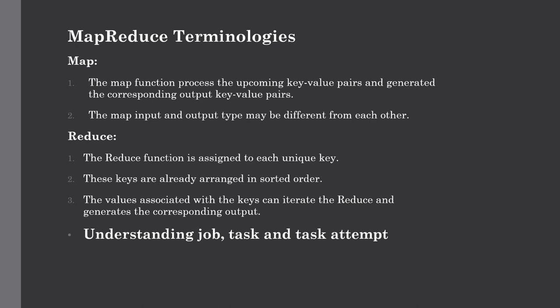The first phase of the MapReduce paradigm is the map function. Map takes key-value pairs as input. Whether the data is in structured or unstructured format, the framework converts it into a key-value pair, where the key references the input value and the value is the dataset on which we need to do the operation. In map processing, the function is defined by the user — any custom business logic according to their requirement. That function is applied to each and every key-value pair, and the map then produces a list of new key-value pairs. The output of map is called the intermediate output, and it is stored on the local disk from where it is shuffled to the reduce node.